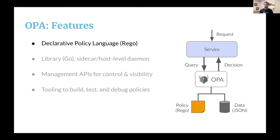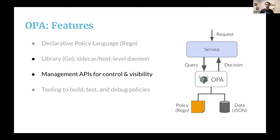A few of OPA's features: at the core of OPA is a high-level declarative language called Rego, which allows you to write policy decisions that are more than Boolean — basically any JSON value, arrays, objects, and so on. OPA is written in Go, and you can deploy it as a sidecar or host-level daemon. It's designed to be lightweight, storing all policies and data needed for evaluation in memory. It provides management APIs to fetch policy and data from remote services, upload decision logs, and report status. Along with the core policy engine, OPA provides a rich set of tooling to build, test, and debug policies, including a unit test framework and integrations with IDEs like VS Code, IntelliJ, and a Rego playground.